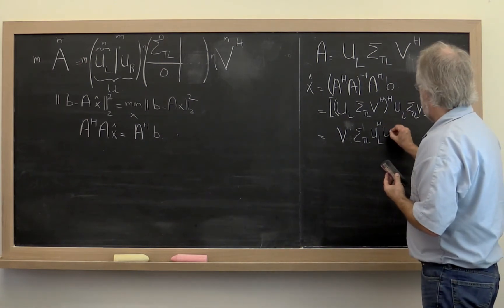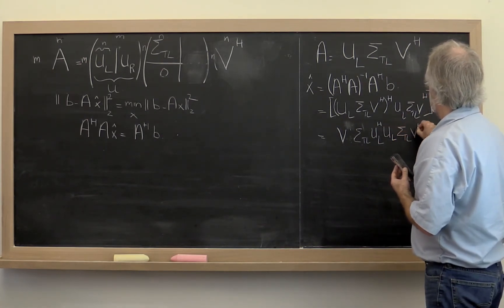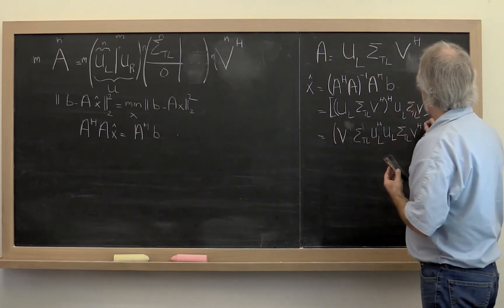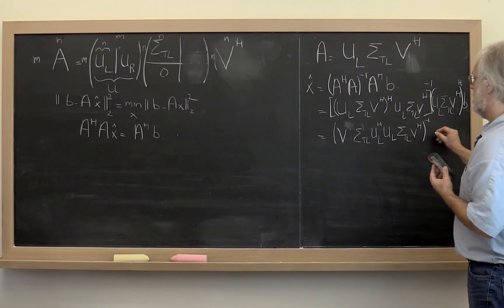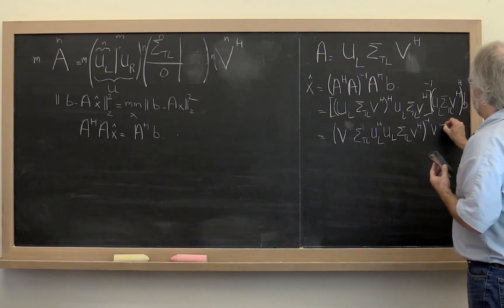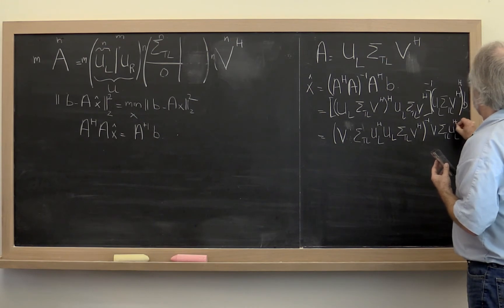Then we need to multiply that times UL sigma top left V Hermitian. We need to take the inverse of that and then we need to do the same trick here, in which case we get V times sigma top left times UL Hermitian times B.